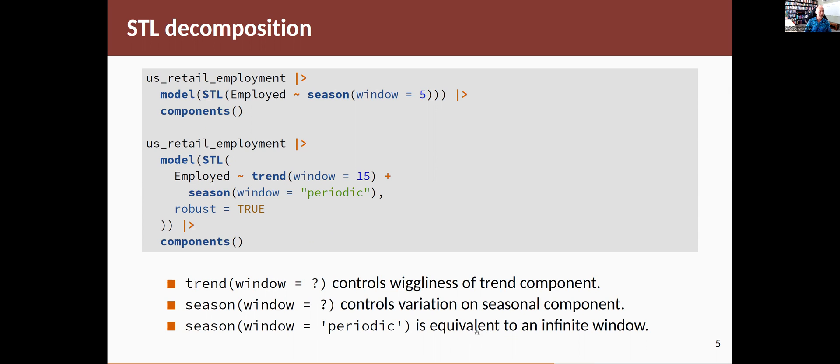So the window is talking about how many years you're going to use in estimating each of the seasonal components for each time period. And then if you set window to be periodic, it's the same as setting window to be infinite.